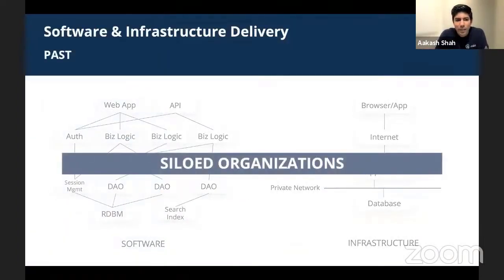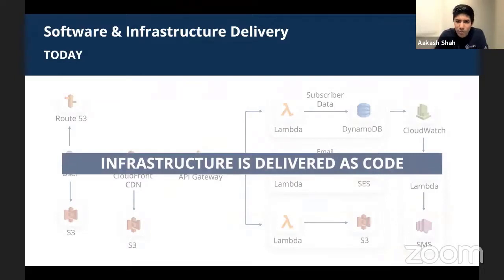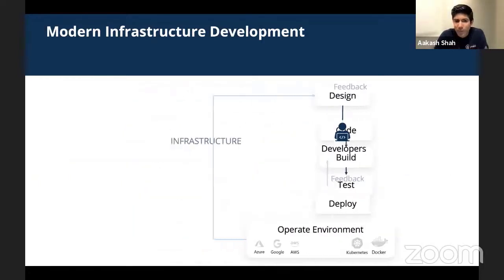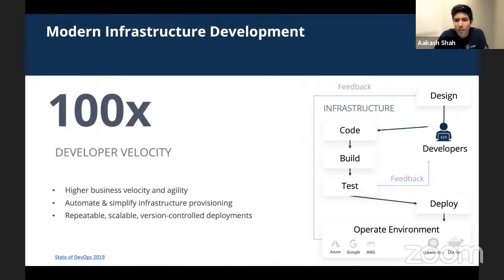If I look back ten years ago at how software and infrastructure was delivered, there were two different teams that had to work together: software development teams and infrastructure teams. What has fundamentally changed today is that infrastructure is now designed and delivered as code, and more and more this infrastructure as code is falling under the umbrella of software development, affording it all the best practices we've learned from a software development standpoint — allowing development teams to accelerate at incredible velocity.